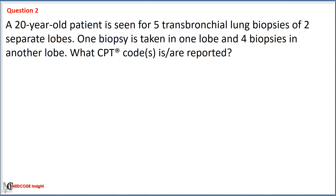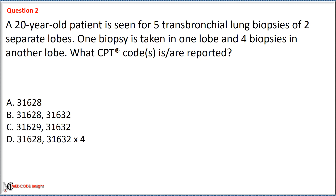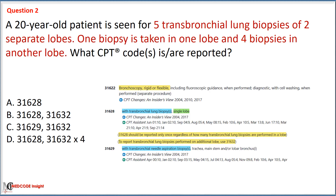A 20-year-old patient is seen for five transbronchial lung biopsies of two separate lobes — one biopsy taken in one lobe and four biopsies in another lobe. What CPT code(s) are reported? Option A: 31628. Option B: 31628, 31632. Option C: 31629, 31632. Option D: 31628, 31632 x4. In the given scenario, five transbronchial lung biopsies were performed across two separate lobes.